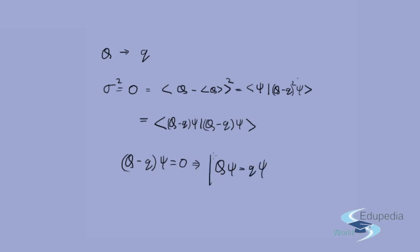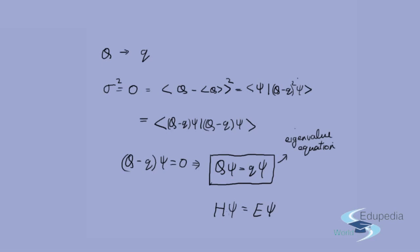This means Q·ψ = q·ψ, where capital Q is an operator and small q is a number. This is called the eigenvalue equation, where small q is the eigenvalue and ψ is the eigenfunction. Note that the Schrödinger equation is itself an eigenvalue equation: H·ψ = E·ψ, where H is the Hamiltonian operator (p²/2m + V) and E is the energy.